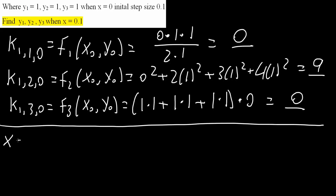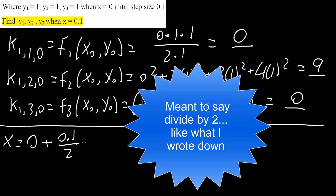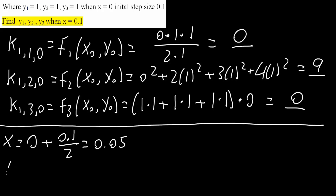This is not the answer yet — we need to do this three more times. So x equals the initial value 0, plus the step size 0.1, divided by 2, giving us 0.05. Next, y1 equals the initial value 1, plus 0.1 times k1,1,0 — which was 0 — divided by 2, giving us 1.